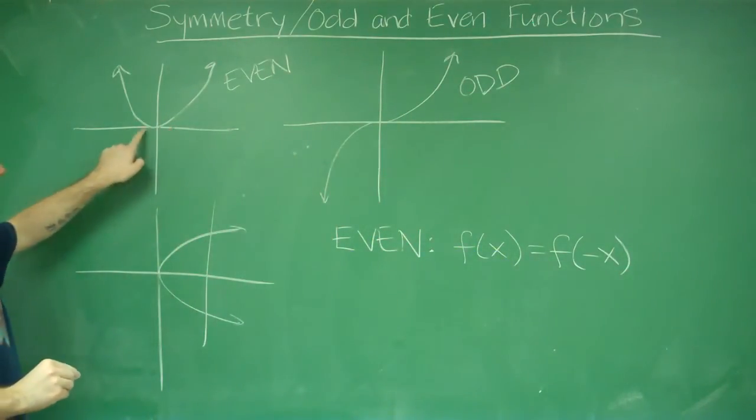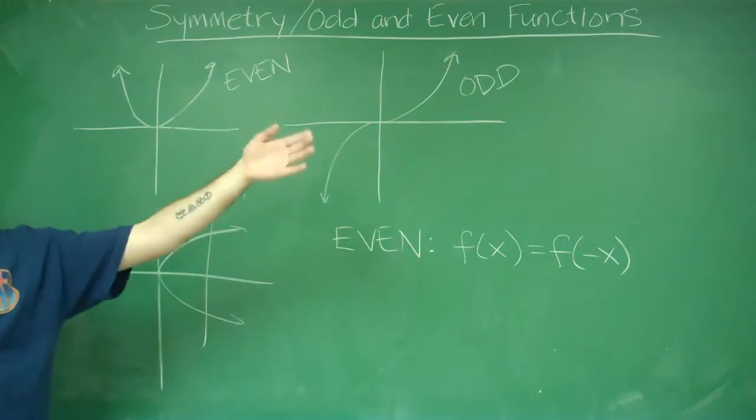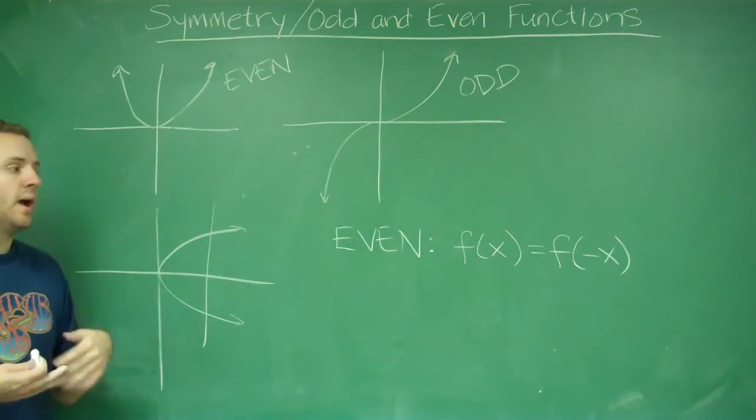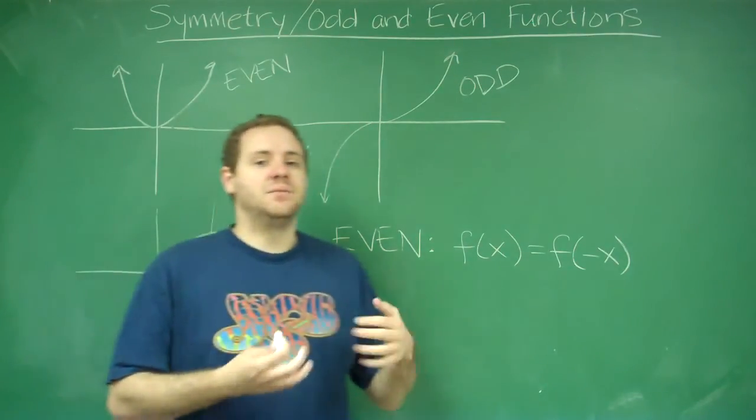So you can see here, 1 and negative 1 have the same y. 5 and negative 5 have the same y. That's a characteristic of an even function.